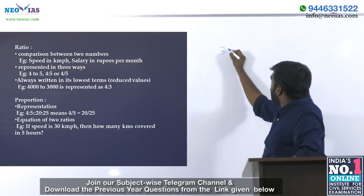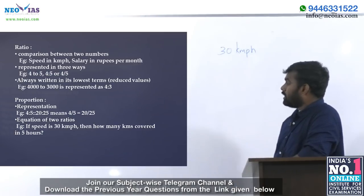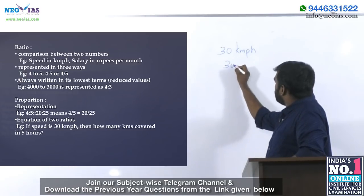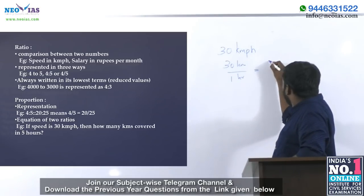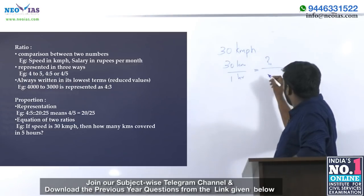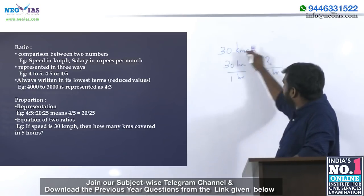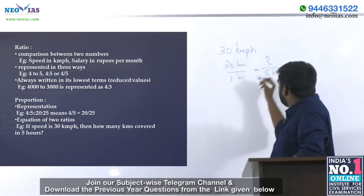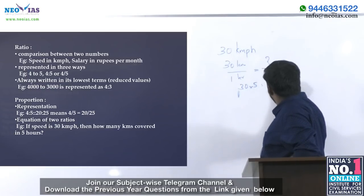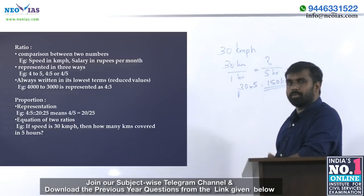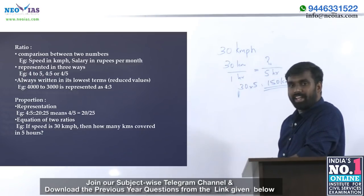You are travelling at 30 kilometers per hour. How much distance will you travel in 5 hours? We write 30 kilometers per one hour, and we need to find the distance for 5 hours. By using the proportionality concept, we can find the distance travelled, which is 30 into 5, that is 150 kilometers. That is the application of proportion.